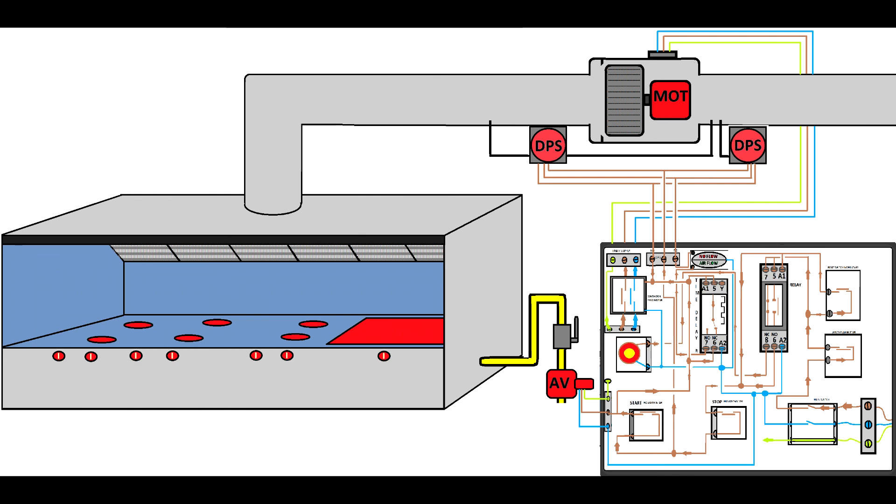On the top you have a warning system which tells you the status of the airflow. It will tell you if you have airflow or if you don't have airflow, because the differential pressure switch will send an input to that warning system. If you have a healthy system, the warning system will tell you that the system is okay.